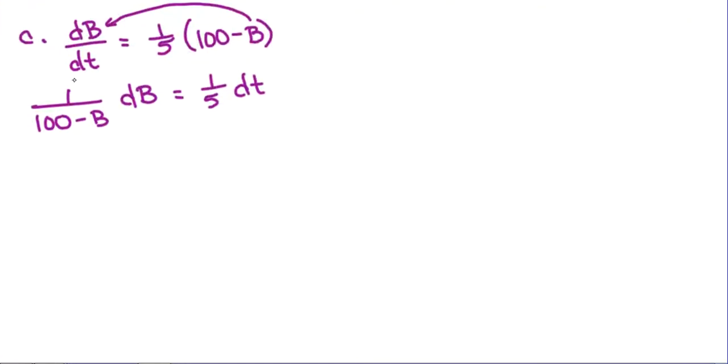So if we move that over by division, move the dt over. So the antiderivative of this was, of course, be the natural log of the absolute value of 100 minus B. It was minus. So we need to put a minus in front. The antiderivative of one-fifth with respect to t is one-fifth t. Don't forget your plus C.